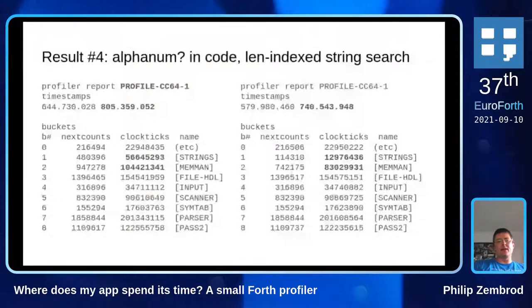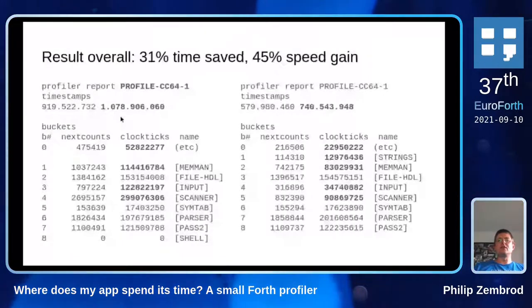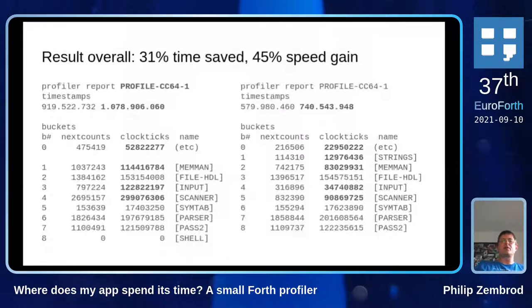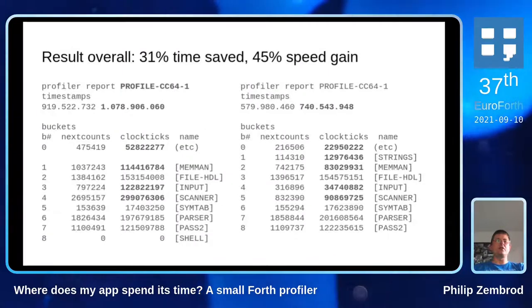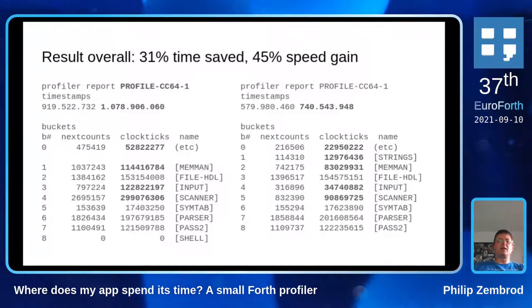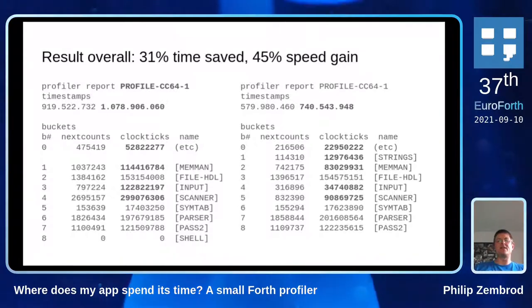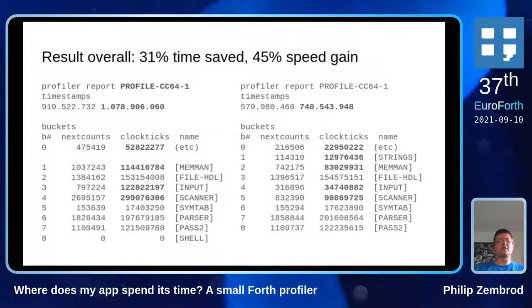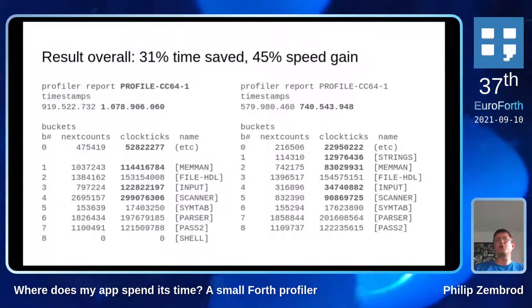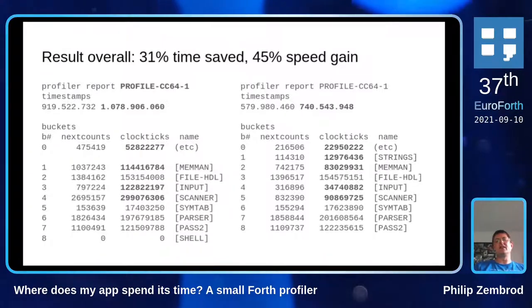That was where I stopped. Looking at the overall numbers: from over a billion clock cycles down to 740 million — 31% time saved, with one additional test added to the suite costing about a percent. Translated into speed gain, that's 45% — almost one and a half times as fast as before, for relatively moderate optimizations. The key thing for me was knowing where to look; without measuring, I had no clue where to go.